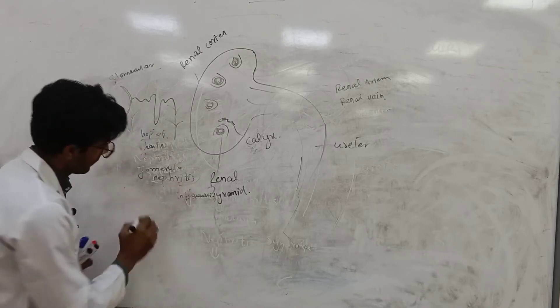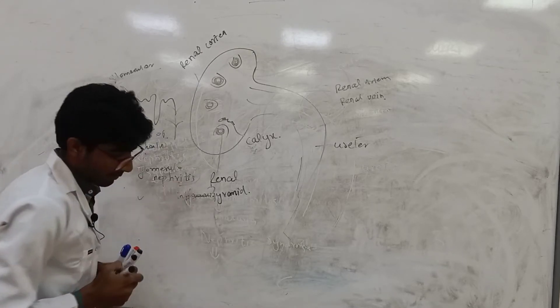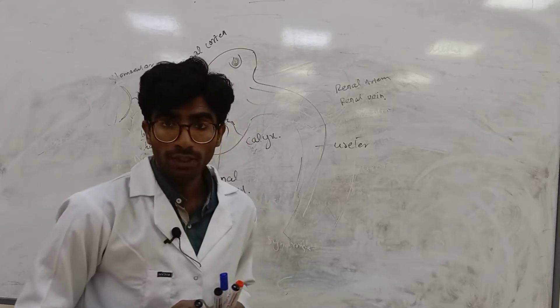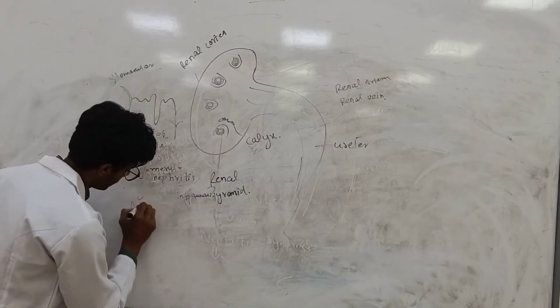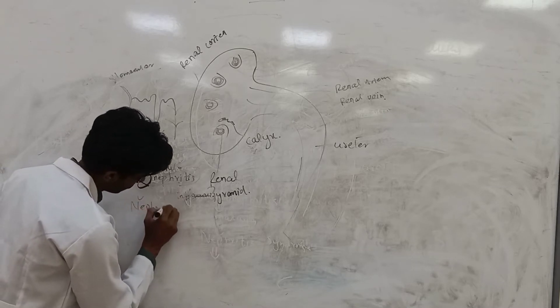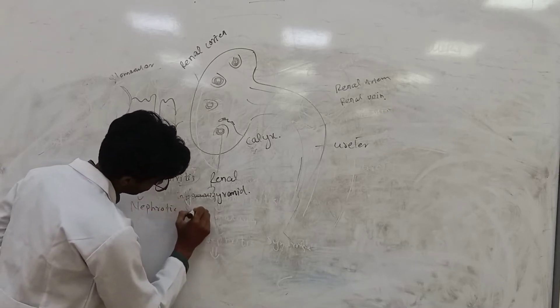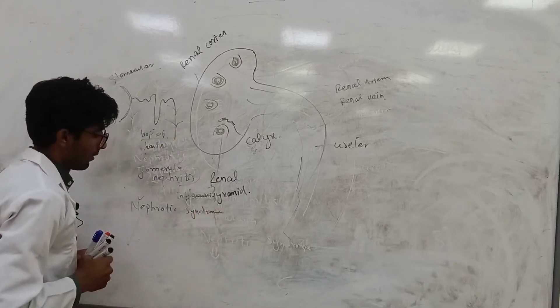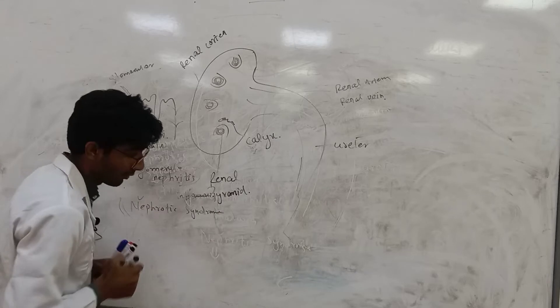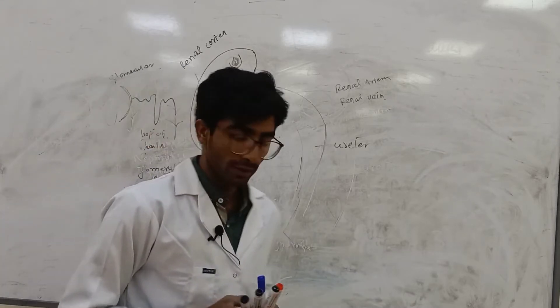Glomerulonephritis. Sometimes here, due to high protein, infection happens. We say that it is nephrotic syndrome. And when nephrotic syndrome happens, you will find protein in the urine.